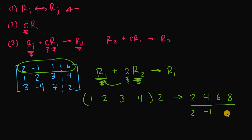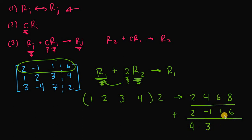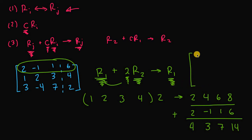Row one is 2, -1, 1, 6. Adding the two rows together: 2+2=4, 4+(-1)=3, 6+1=7, 8+6=14. So the new matrix has r1 as 4, 3, 7, 14, while the other two rows did not change: row two is 1, 2, 3, 4 and row three is 3, -4, 7, 2.